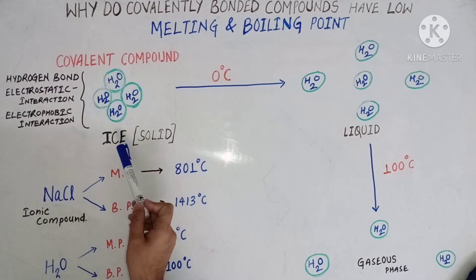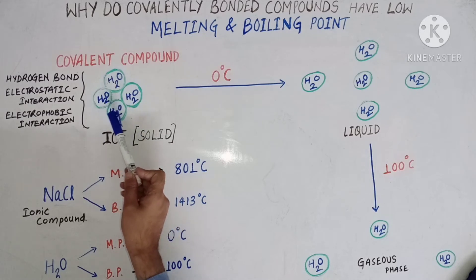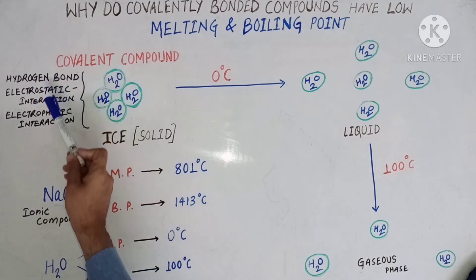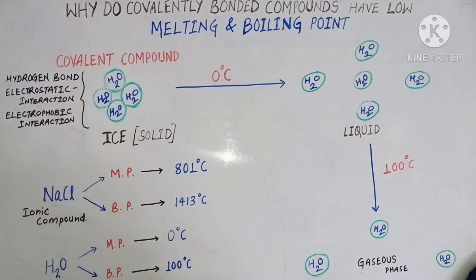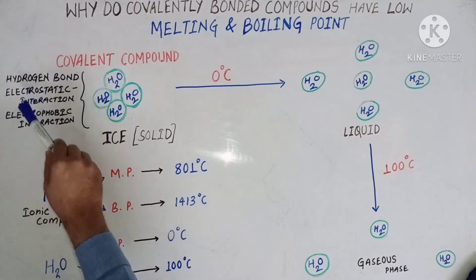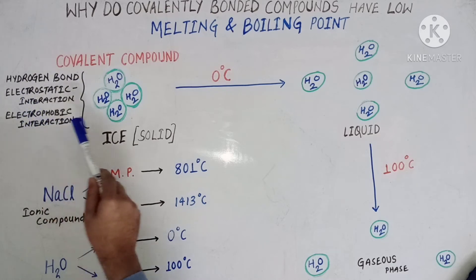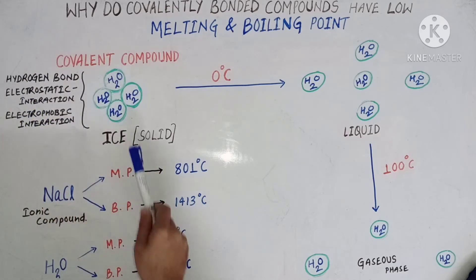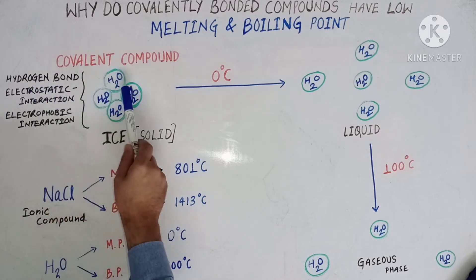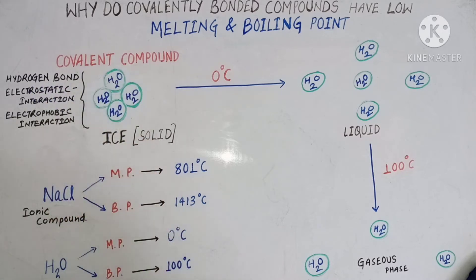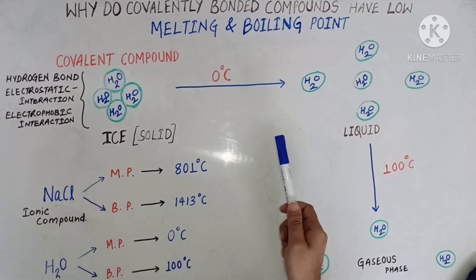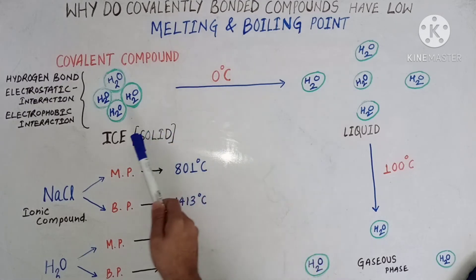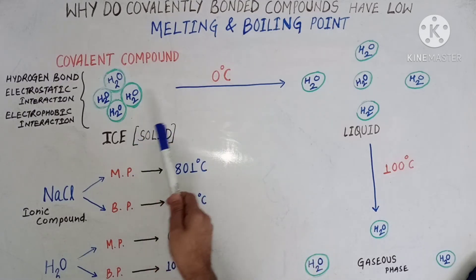Water molecules in ice are closely packed via three linkages: hydrogen bond, electrostatic interaction, or electrophobic interaction. All three interactions may be present in a covalently bonded compound. In the case of ice, hydrogen bonds are present between water molecules. This hydrogen bond is quite weak, so it can be broken down easily by supplying a small amount of energy.